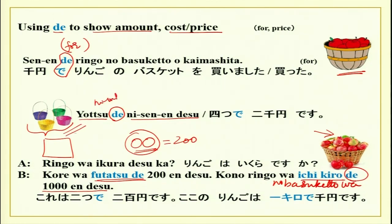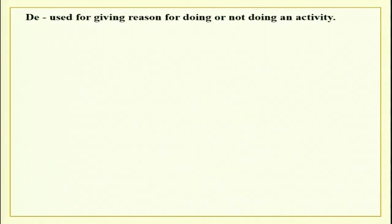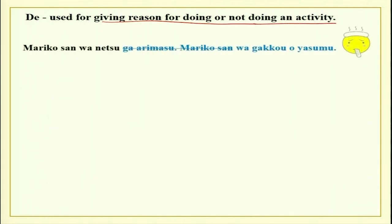There is also the usage of de in our passage — yuki de. De here is used for giving reason for doing or not doing an activity. With de, you can also give reason. There are two sentences: Mariko san wa netsu ga arimasu — Mariko san has fever. Mariko san wa gakkou wo yasumimasu — she is not going to school. How do you join these two sentences?